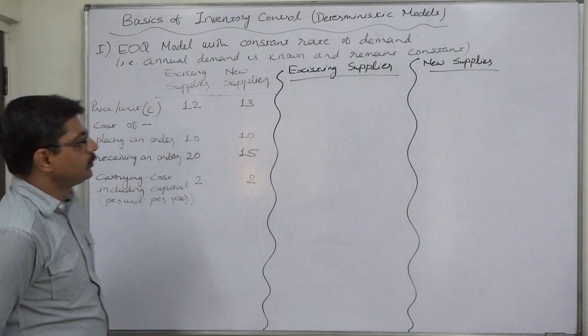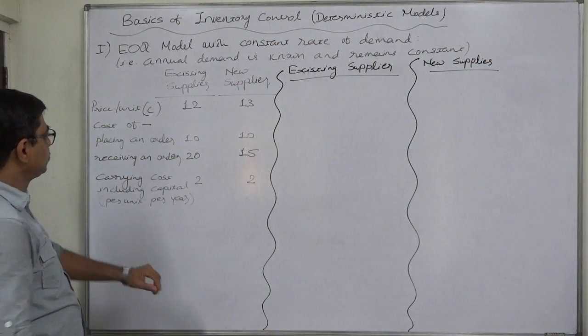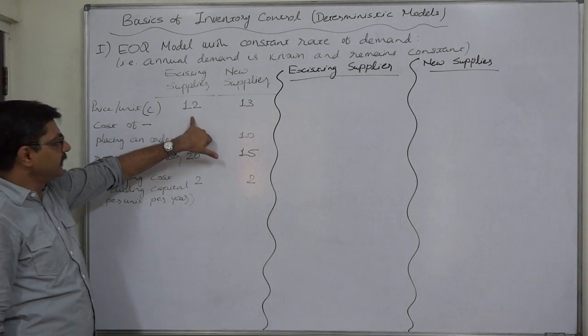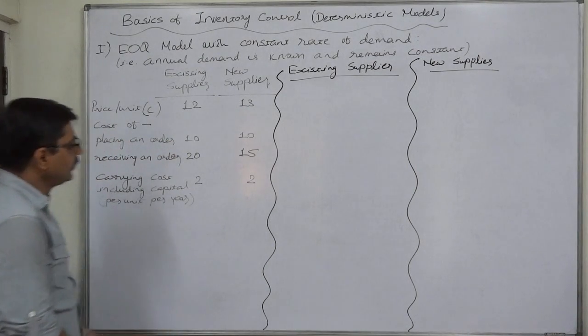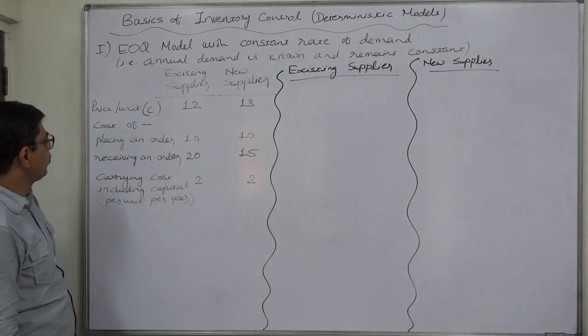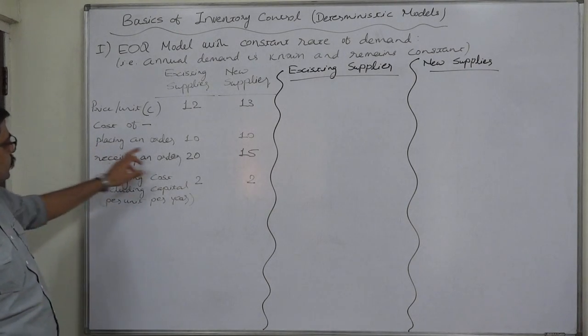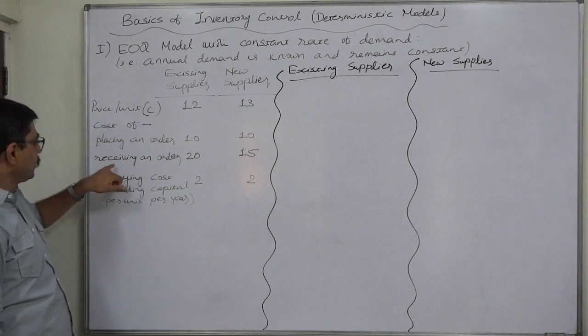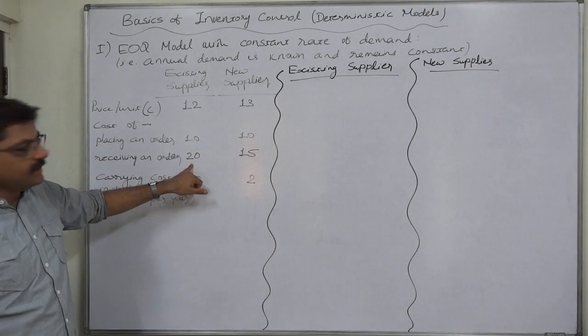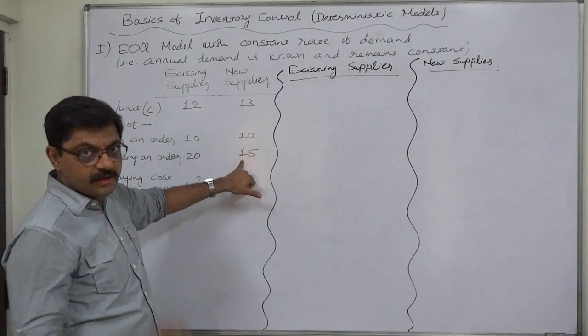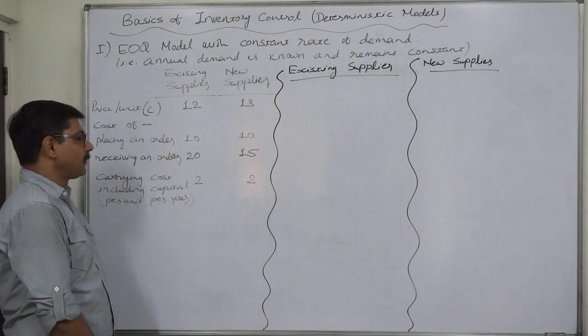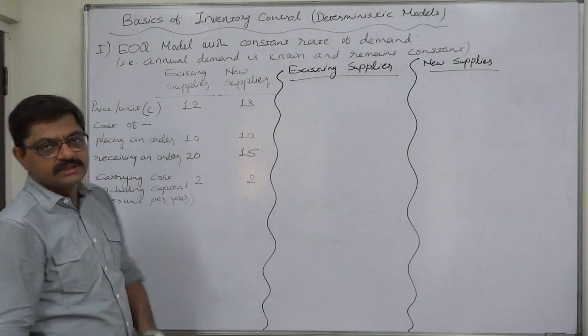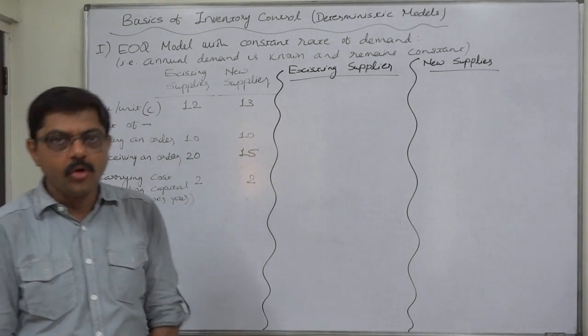The details are as given here. Price per unit: existing supplier supplies at rupees 12 per unit, the new at 13. But there is a considerable difference in ordering cost. Cost of placing an order is equal at both places, rupees 10 per unit, but cost of receiving an order is rupees 20 with the existing supplier and considerably low, rupees 15, from the new supplier. Carrying cost, including capital per unit per year, remains same because we are going to carry or hold the unit after purchasing from anywhere.